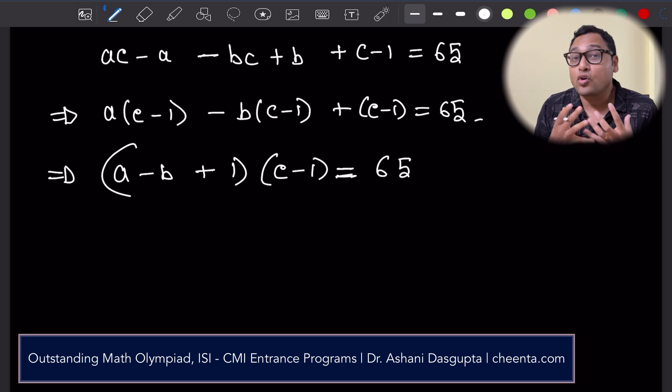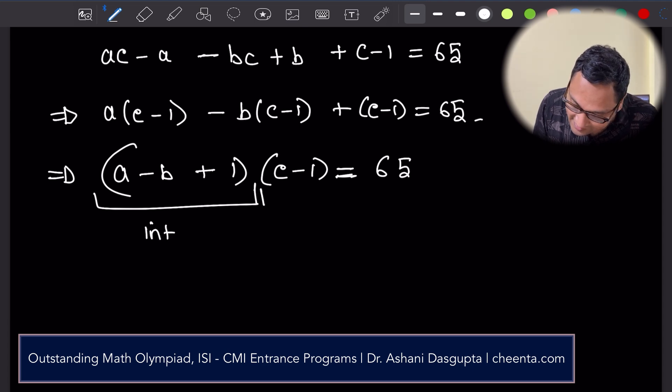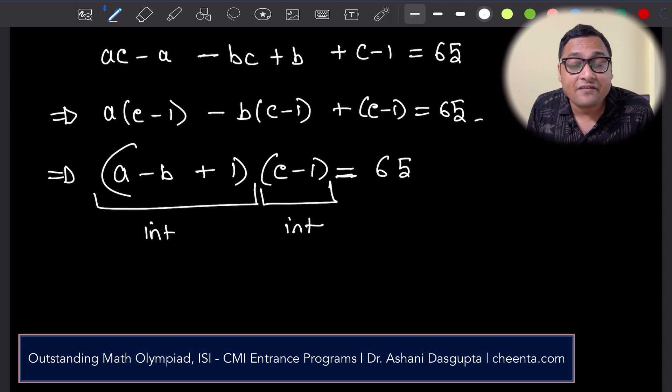Now what's awesome about this equation is that the left-hand side, this is integer and this is integer. In the right-hand side you have 65, which can be factorized in only a few ways.